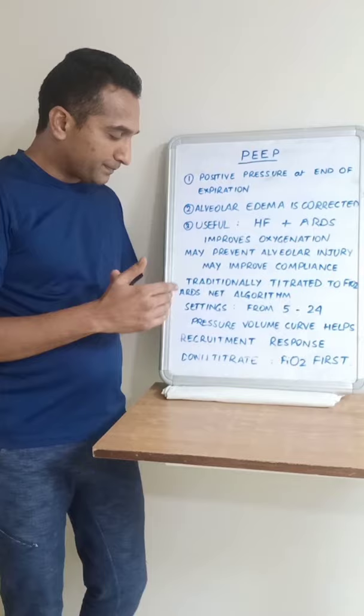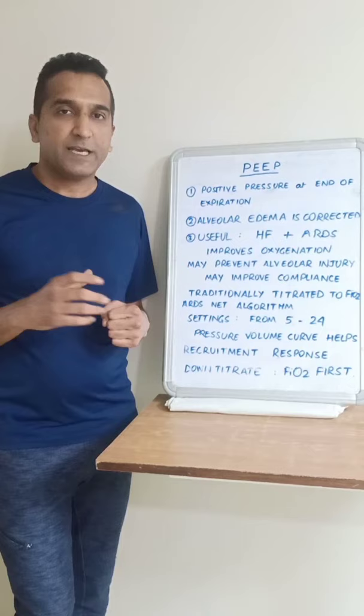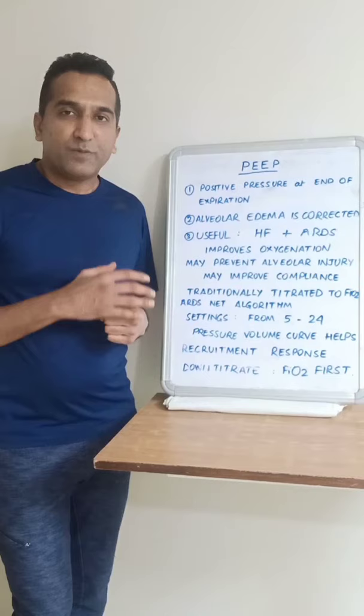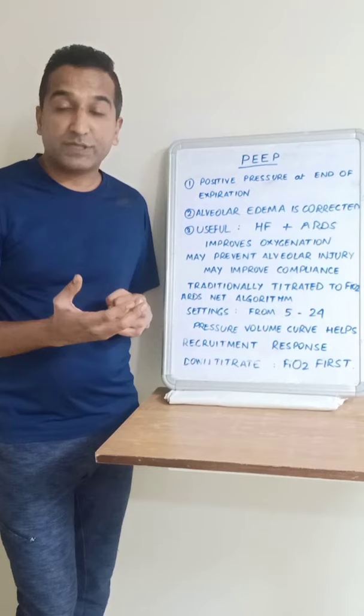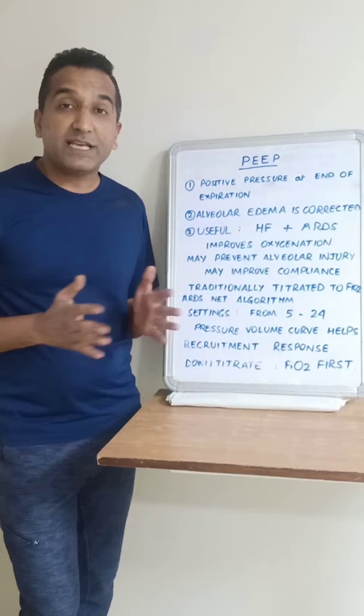Recruitment maneuver is worth discussing. It is also an application of PEEP, but very high PEEP for a very transient period — generally around 40 centimeters of PEEP for 40 seconds applied continuously. After a few seconds or minutes, we look at improvements in both oxygenation and compliance. The problem with such high PEEP is that there could be trauma due to the pressures, or the increase in intrathoracic pressure can be too much, leading to reduced venous return and hypotension.